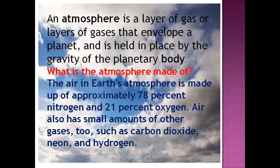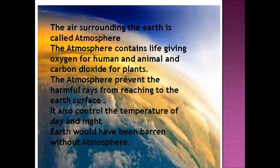The atmosphere is made of 78 percent nitrogen gas, 21 percent oxygen, and the remaining gases include carbon dioxide, neon, and hydrogen. Each of these gases is very important for our life. The air surrounding the earth is called the atmosphere. Oxygen is useful for human breathing, carbon dioxide is useful for plants, and this layer also helps protect us from harmful rays coming from the sun by reflecting them.